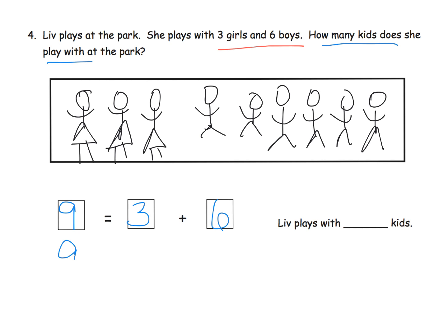And remember, of course, it could also look like this. And really, it could also, we can switch it around and have the answer be on the right side of the equation as well. And so the idea is what's over here? Liv plays with nine kids.